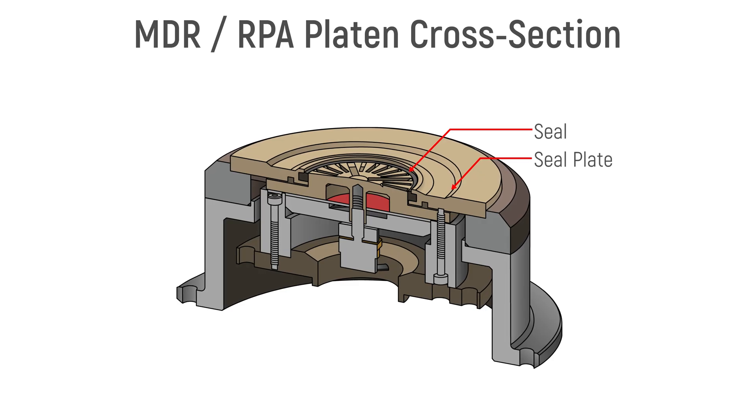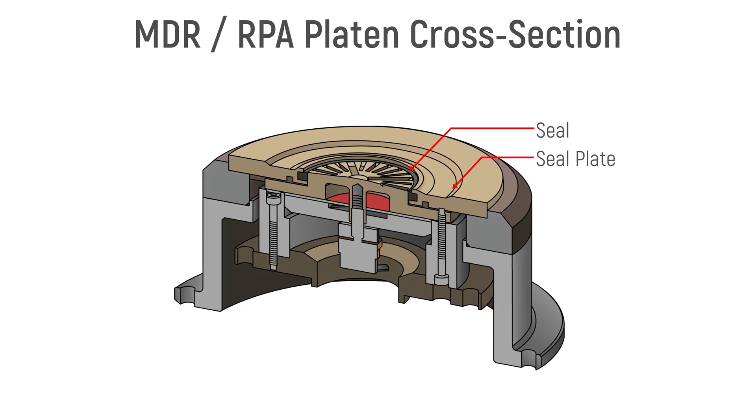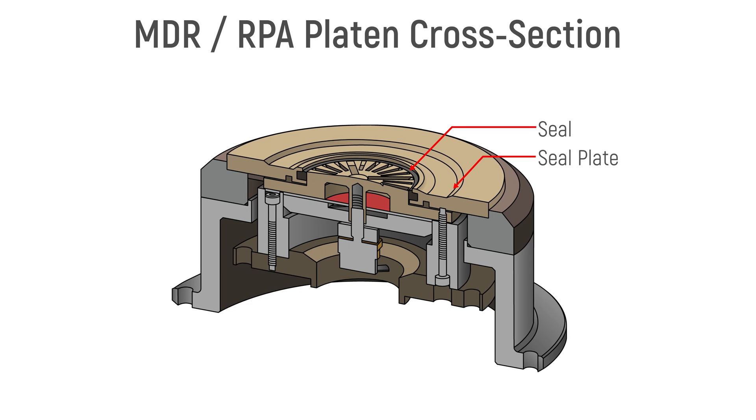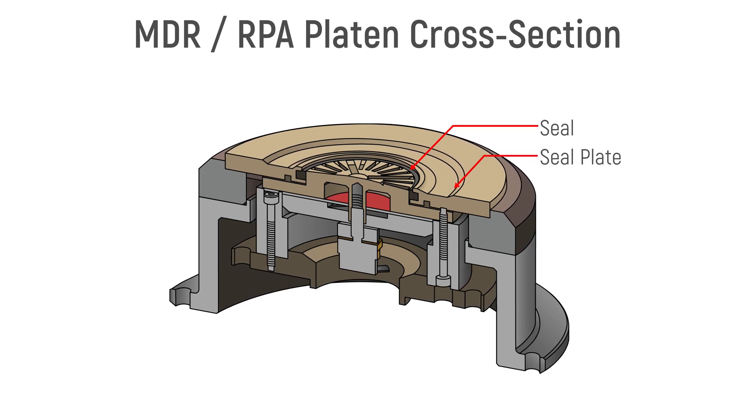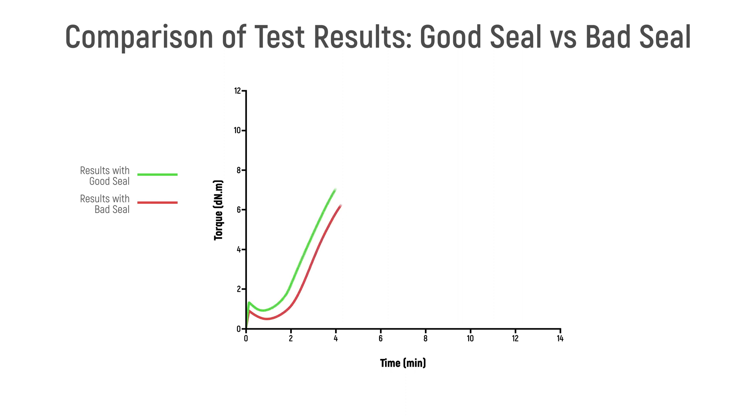The seals prevent material flowing underneath the seal plates into the die subassembly area. Over the course of testing, it is normal for the seals to experience wear and require replacement. This wear may be reflected in data or with buildup of material underneath the seal plate, which in turn can affect results.